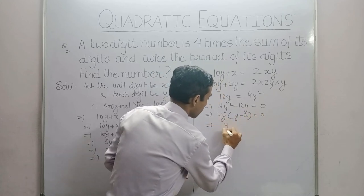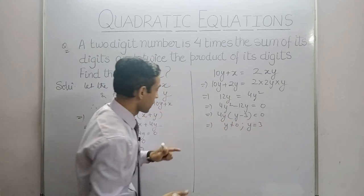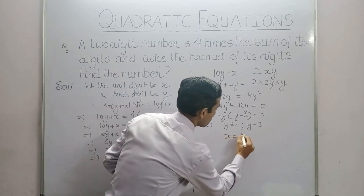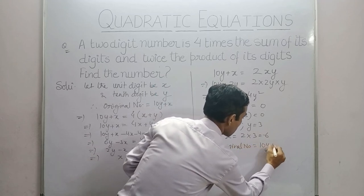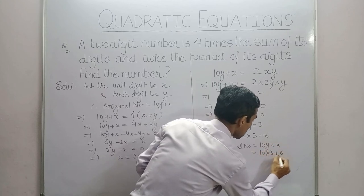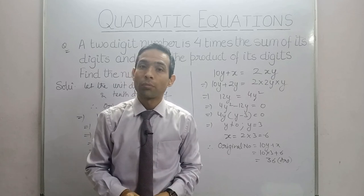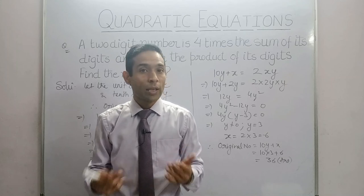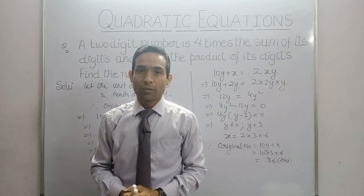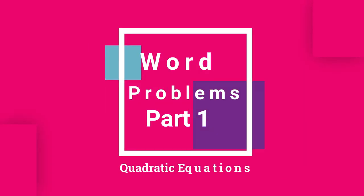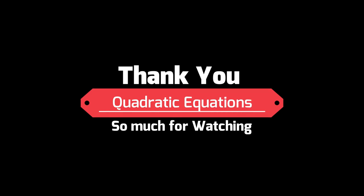This gives two values: y = 0 or y = 3. Since it's a two-digit number, y cannot be 0, so y = 3 is our tens digit. From equation 1: x = 2y = 2(3) = 6, so 6 is our unit digit. Therefore, original number = 10y + x = 10(3) + 6 = 36 is our answer. This part is complete. In the next part we will solve a new type of question. If you like it, like and share it. Thank you so much for watching.